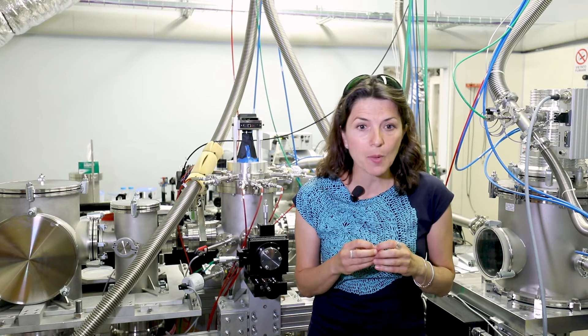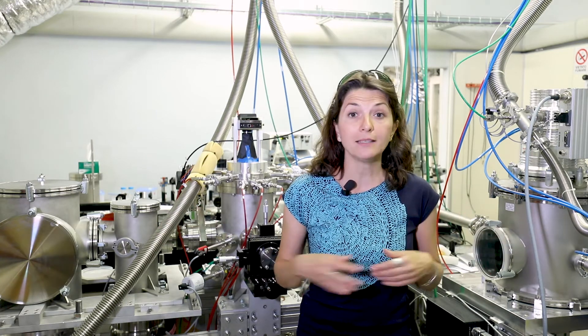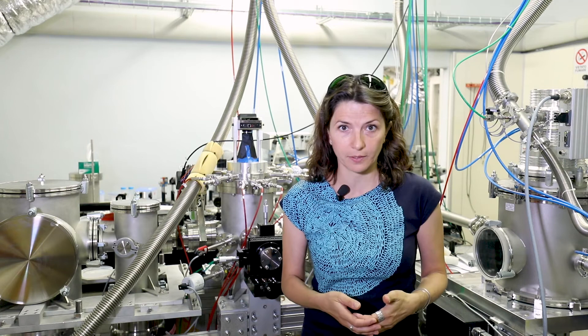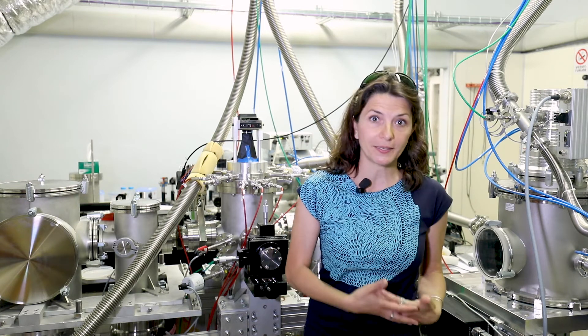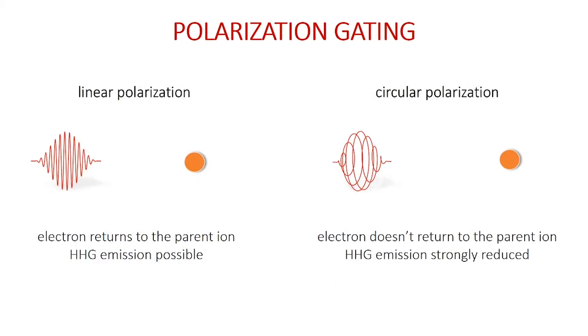Another possible approach is temporal gating. In this scheme, the external electric field driving the harmonic generation process is manipulated in time to isolate only one emission event in the attosecond pulse train. This can be done in several ways. One way is polarization gating, where the confinement of harmonic emission is obtained by changing the polarization of the driving field.